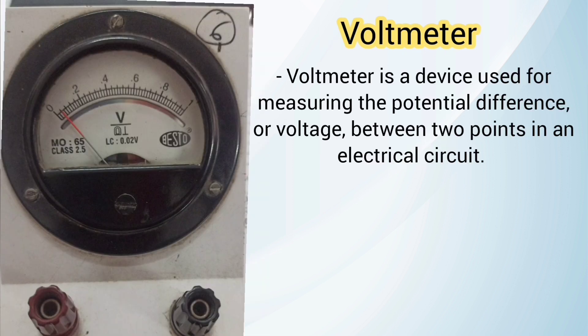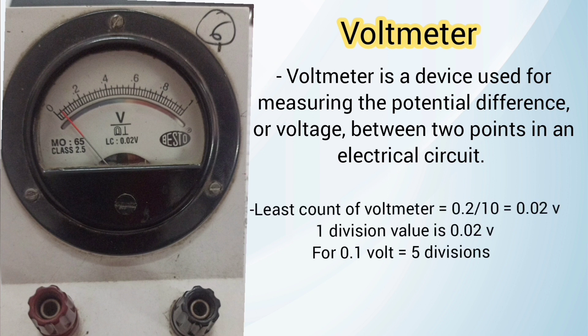Voltmeter: A voltmeter is a device used for measuring the potential difference or voltage between two points in an electrical circuit. The least count of the voltmeter is 0.2 divided by 10, as from 0 to 0.2 we have 10 divisions. So one division value is 0.02 volt, and for 0.1 volt we require 5 divisions.